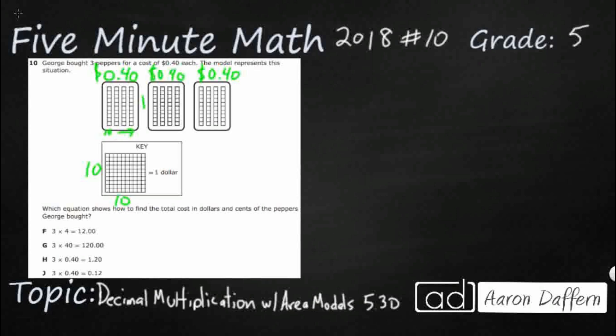Right? Because we could easily just add this and see what we get here. So we get $0.40, $0.40, $0.40. Let's see what we're doing here. We add these three. So that's $0.40, $0.80, $1.20. Let's make sure we bring our decimal down. So it looks like we're looking at $1.20. But how can we represent that with multiplication?